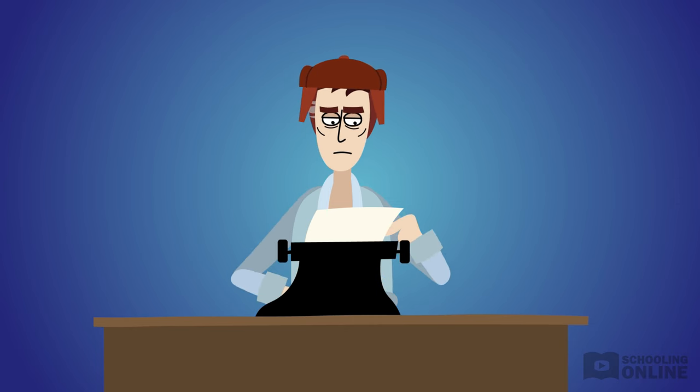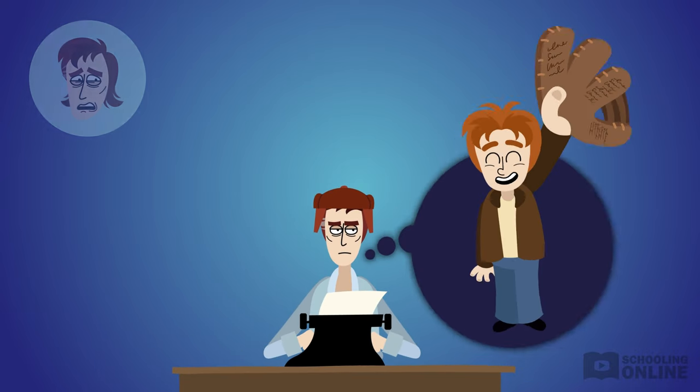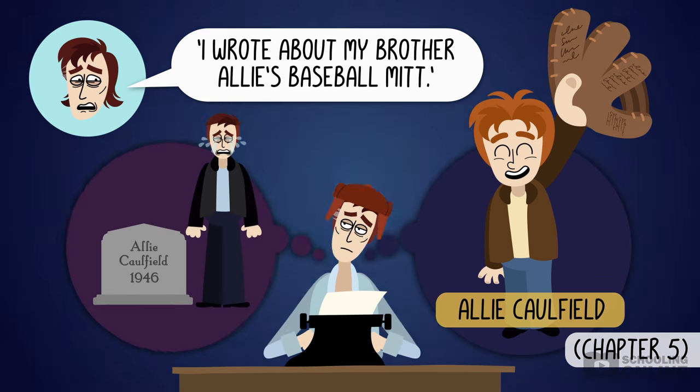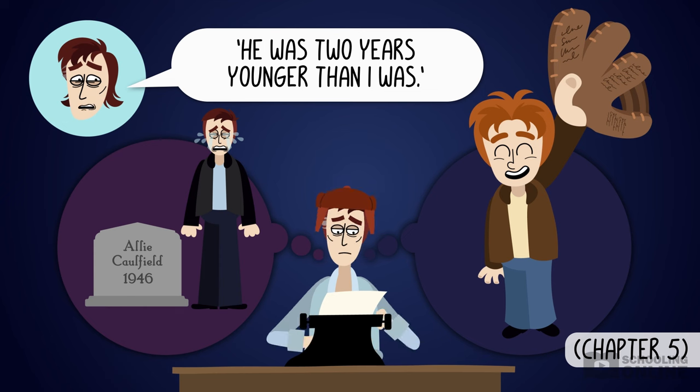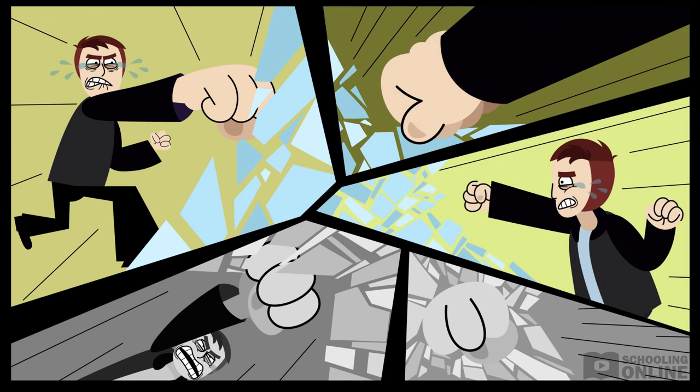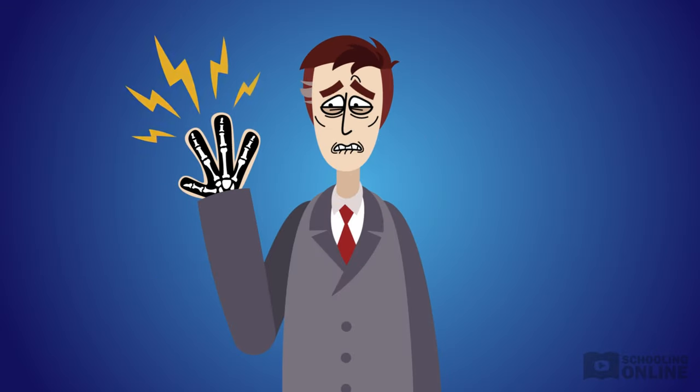Later that evening, back in the dorm room, Holden started typing out a composition for Stradlater. He couldn't think what to write about, so he described his little brother Allie's special baseball mitt. Allie died from leukemia in 1946. Holden was 13 at the time, and Allie was only 11. Holden loved his brother Allie so much that when he died, Holden smashed all the windows in the garage with his fist. To this day, Holden's hand still hurts when the weather gets cold and damp.